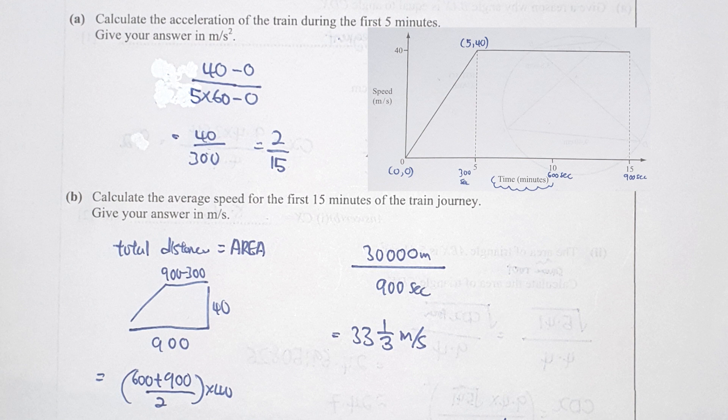For part B, I first calculate the total distance by finding the area of the trapezium shape, giving 30,000 metres. Then 30,000 metres over 15 minutes — converting 15 minutes to 900 seconds — gives the final result of 33 and 1 over 3 metres per second. That's pretty much it for this paper; I hope you find it helpful. Feel free to share with friends who are struggling, and all the best in your upcoming examination!